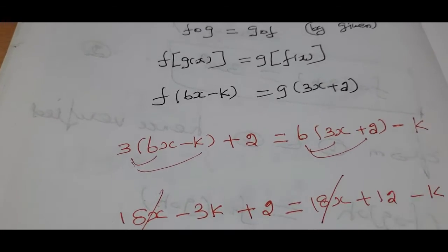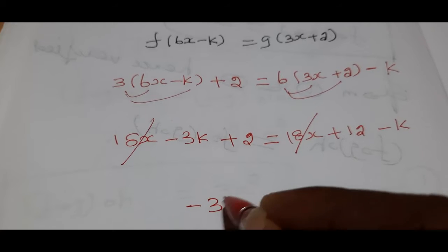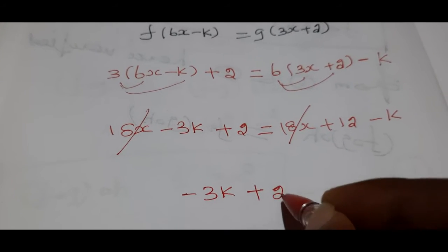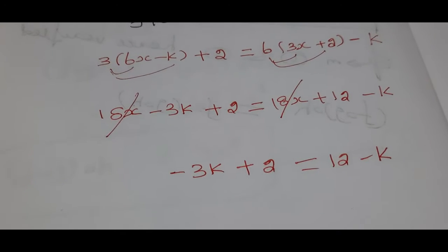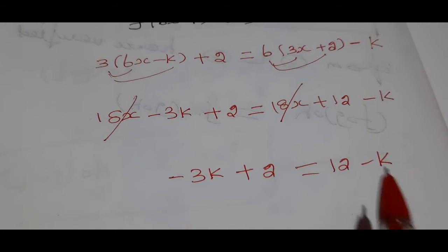The x terms are canceling. What do we find? Minus 3k plus 2 is equal to 12 minus k. The variable is available, so we find minus k.